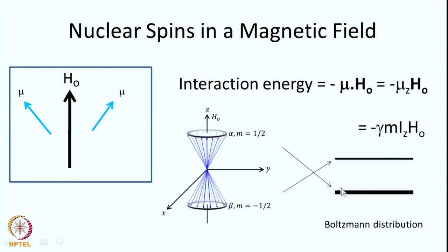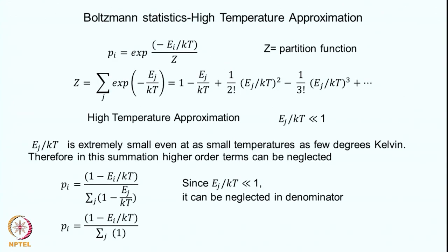The spins will be distributed between these two energy levels, and this is determined by Boltzmann statistics. If you consider a state i, the probability that the nuclear spin is in that state is given by exponential minus E_i over kT, where k is the Boltzmann constant, T is the temperature, and Z is the partition function. Z is defined as the summation of terms e^(E_j/kT) where the index j runs over all 2I plus 1 states.